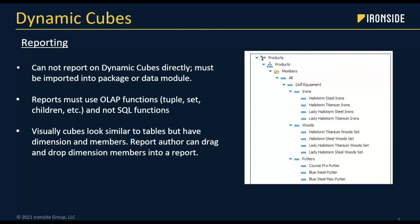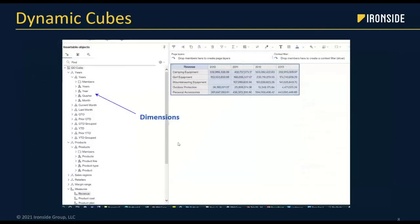Visually it looks similar to tables but it's quite different — there's a hierarchical approach to everything. Looking at a screenshot in the reporting tool, you see dimensions, different icons for levels, and things like that. Generally speaking, you're going to build cross-tab type reports or charts. It's not meant to be flat — it's meant to be multidimensional. That's one of the unique things about Dynamic Cubes: it is a true OLAP solution.